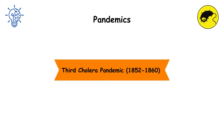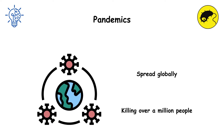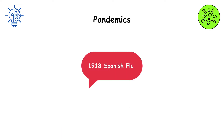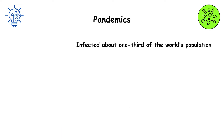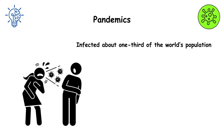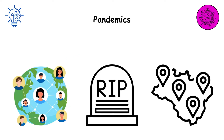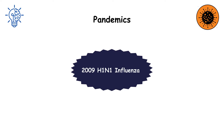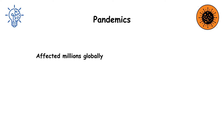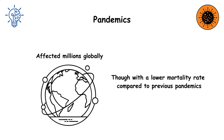The Third Cholera Pandemic (1852–1860) spread globally, killing over a million people. The 1918 Spanish Flu infected about one-third of the world's population, causing approximately 50 million deaths. The HIV/AIDS pandemic, from the 1980s to the present, has caused millions of deaths worldwide. The 2009 H1N1 influenza affected millions globally, though with a lower mortality rate compared to previous pandemics.